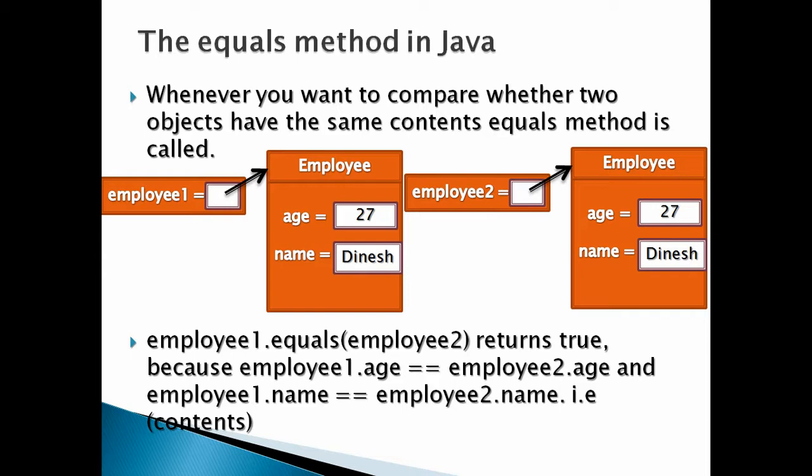Here in the slide there are two employee objects, employee1 and employee2. The Employee class has two properties: age and name. Employee1 instance is pointing to an employee object having age as 27 and name as Dinesh. Same is the case with the contents of employee2 instance — employee2 is also pointing to an employee object having age as 27 and name as Dinesh. If we want to check whether these two employee instances are equal by their contents, we can call the equals method.